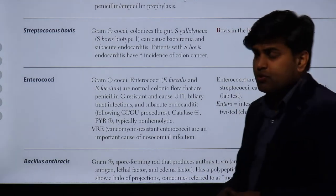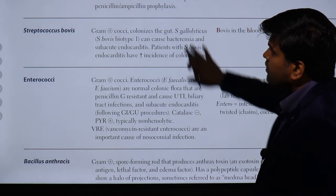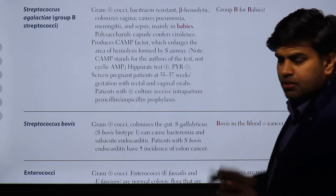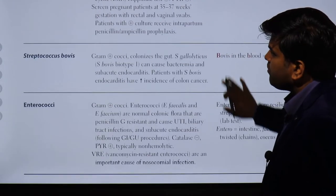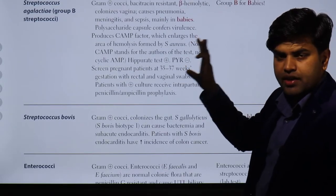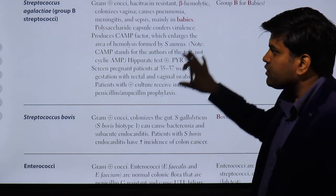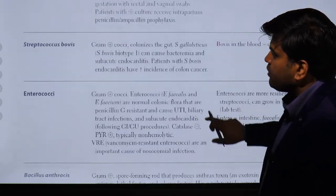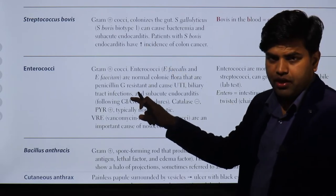Good morning everyone. Today we are continuing our previous lecture. We were on page 137 of USMLE Step 1 2021, the microbiological section. We previously discussed beta hemolytic streptococci — gram positive, catalase negative, beta hemolytic — which included Streptococcus pyogenes and Streptococcus agalactiae. Today we will discuss two more bugs: Streptococcus bovis and enterococci.